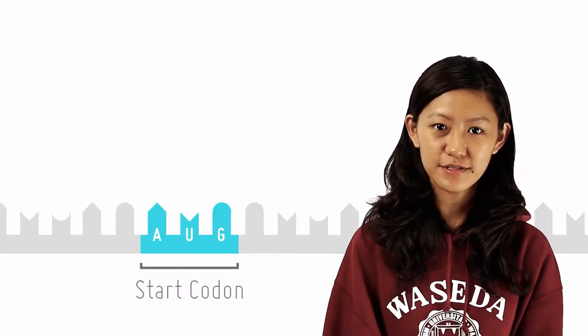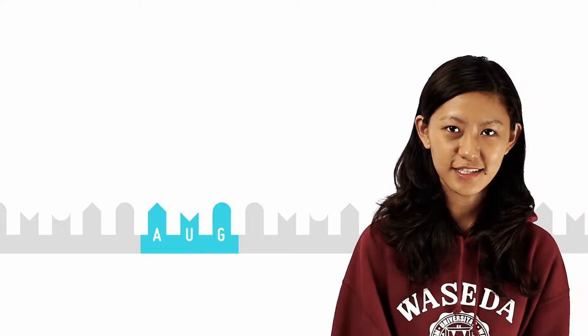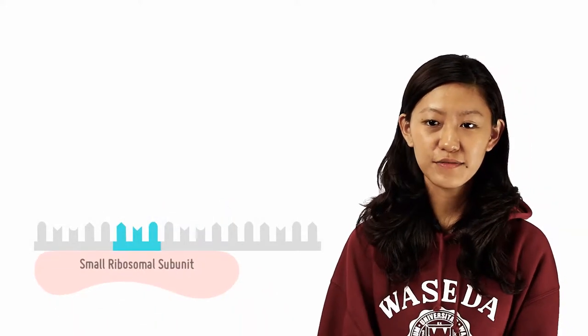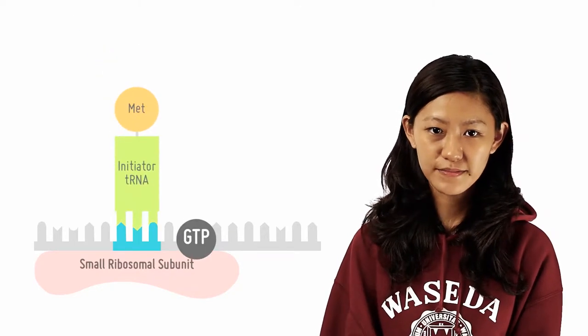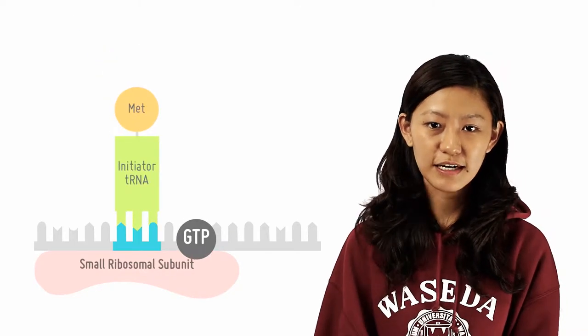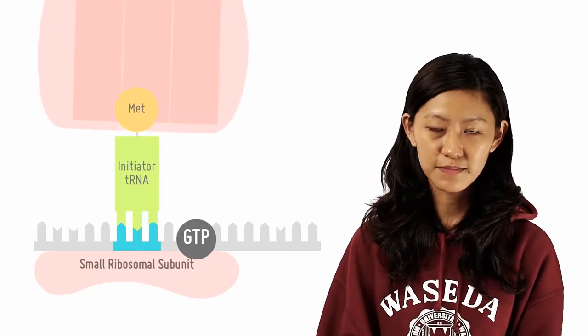Through the help of initiator factors, the small ribosomal subunit assembles at the start codon, AUG. You can remember the codon with the question, 'Are you good?' So the initiator tRNA forms base pairs with the complementary AUG codon, and the large ribosomal subunit binds.